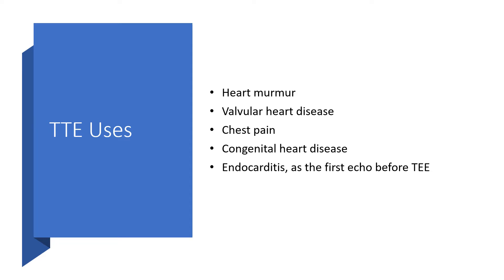Other uses of transthoracic echo include newly diagnosed heart murmur, valvular heart disease, chest pain of undetermined origin, congenital heart diseases, and endocarditis — as the first echo before proceeding to transesophageal echo. For infective endocarditis, the best definitive test is TEE, but TTE is done first since it is non-invasive, before calling for the invasive TEE.